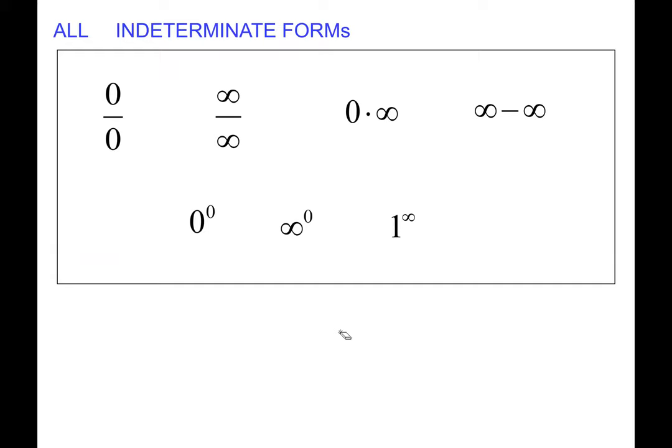Here is the list of all seven indeterminate forms. Zero over zero and infinity over infinity are the most important with respect to the L'Hôpital Rule. We may also see the product form, the difference form, and three power forms: zero to the zero, infinity to the zero, and one to the infinity.